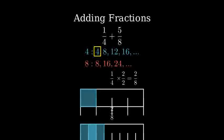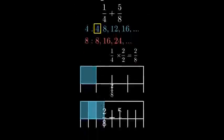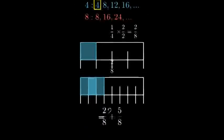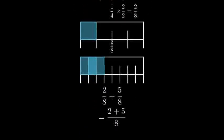Now we can rewrite our problem with the same denominator, two-eighths plus five-eighths. When adding fractions with the same denominator, we add the numerators and keep the denominator the same.